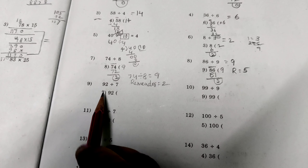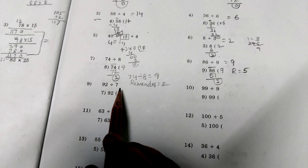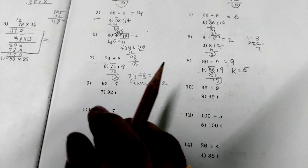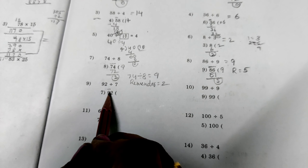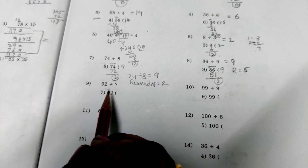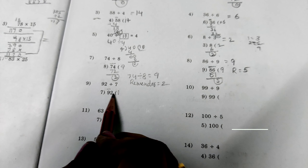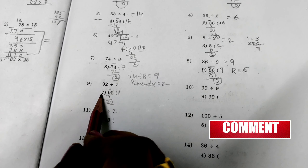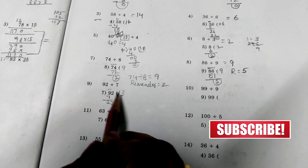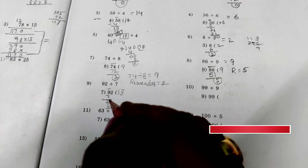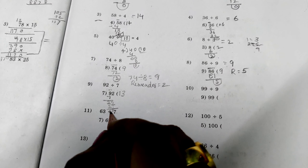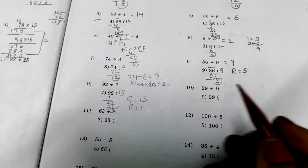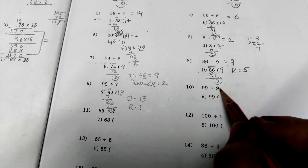Next problem: 92 divided by 7. Here 7 is smaller than 9, so we are taking only 9. How many times can we subtract 7 from 9? Only one time. So 7 once are 7. 9 minus 7 is 2. Get down 2 — it will make 22. How many times can we subtract 7 from 22? 3 times. 7 threes are 21. 2 minus 1 is 1. 2 minus 2 is 0. Here quotient is 13. Remainder is 1.